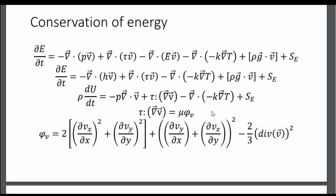For a Newtonian fluid, the double tensorial product of the viscous stress tensor with the velocity gradient matrix equals mu times phi_v, where phi_v is a term relative to the square of a differential. This is really useful for simplifying our equations.